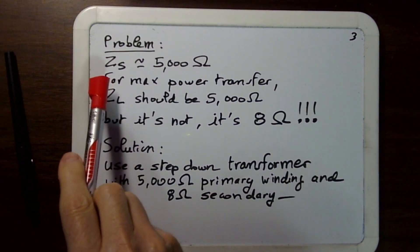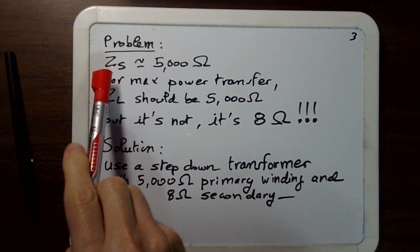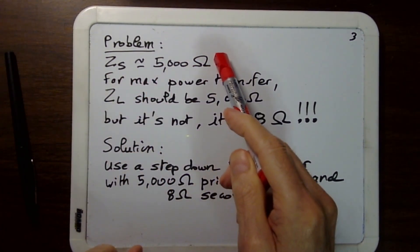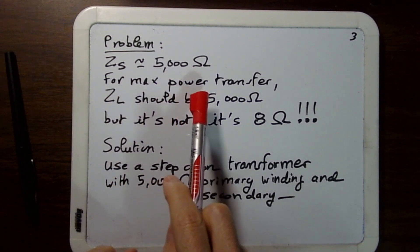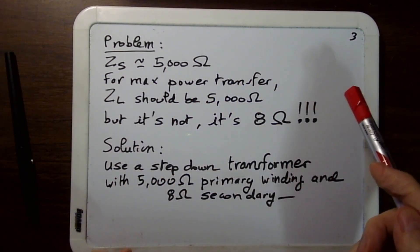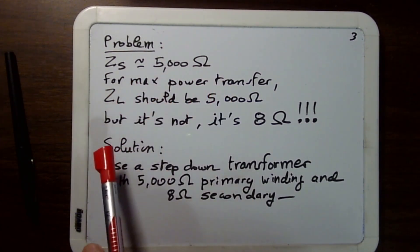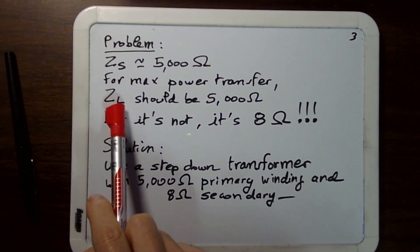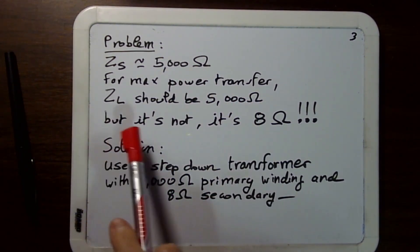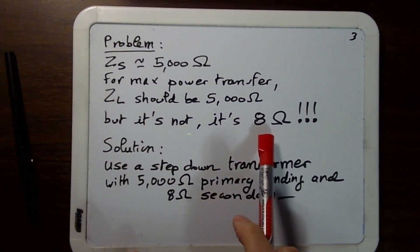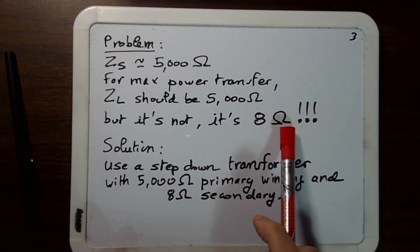The problem in our case is that the internal impedance of the plate circuit of the tube is about 5000 ohms — you can figure that out from the tube's characteristics. For maximum power transfer when driving a speaker, you want maximum power, not maximum voltage. That means Zl should also be 5000 ohms, but in our case it's not. The speaker impedance Zl is 8 ohms — or 4 ohms, but I'll use 8 ohms here.